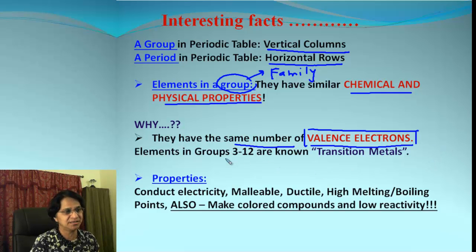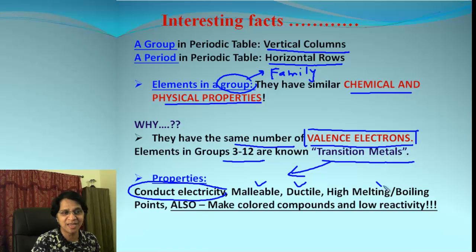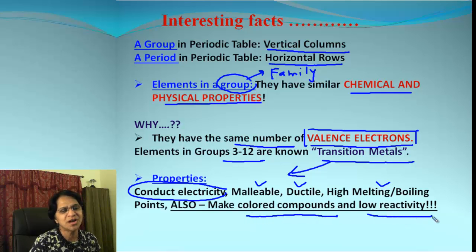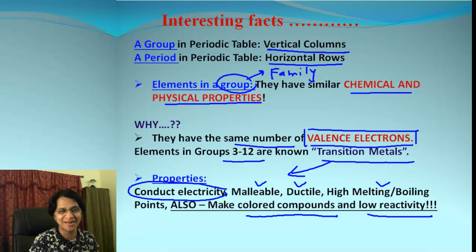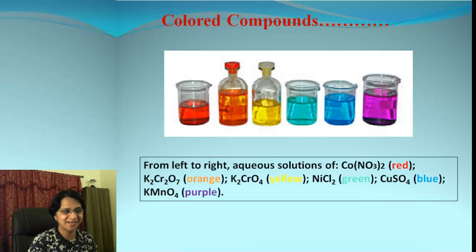Groups 3 to 12 are the transition metals. Their properties include conducting electricity, being malleable and ductile, and having high melting and boiling points — all similar to general properties of metals. How are they different? The main difference comes with the colored compounds they produce, and also they are less reactive than alkali or alkaline earth metals.